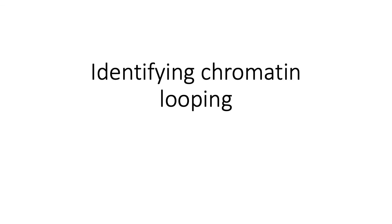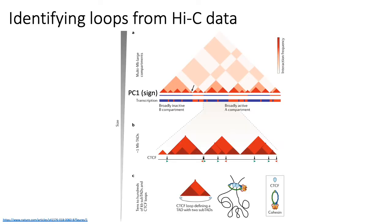Another important feature of chromatin interactions related to TADs is the concept of chromatin looping. I spent time talking about how to identify TAD structures in A-B compartments, but I want to spend a little time talking about one particular feature of blocks on the diagonal — the so-called corner dot.